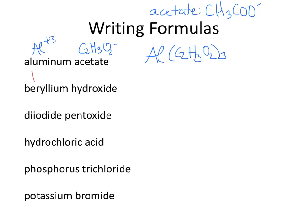Next we have beryllium hydroxide. Beryllium is Be plus 2, from group 2. Hydroxide is OH minus, so since OH is minus 1, I'll need 2 of them: Be(OH)₂. This is the most common one people forget parentheses on, because it's just an OH. But without the parentheses, there'd be 2 hydrogens and only 1 oxygen, and we want 2 hydrogens and 2 oxygens.